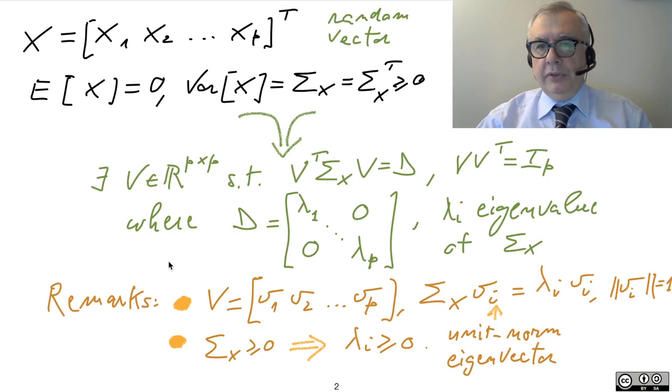And in general, I will consider a P-dimensional vector, X. This is my random vector, zero expectation. Its variance, which is a square P times P matrix, we call it sigma X. It is symmetric and positive semi-definite.